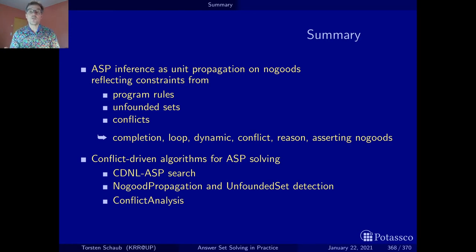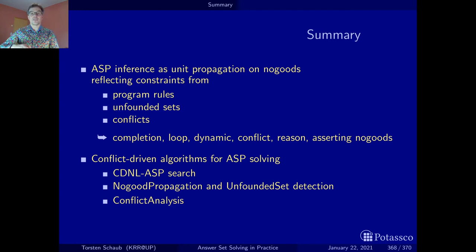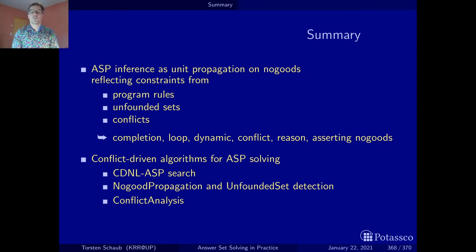An important concept are conflict no-goods, and how they are transformed. For this we use the reason no-goods, which give us the reasons for the unit resulting literals. Last but not least, the result of applying this resolution process on conflict and reason no-goods are the asserting no-goods, which have a unique implication point and tell us where to jump back to and where to immediately engage unit propagation.